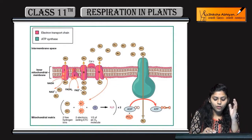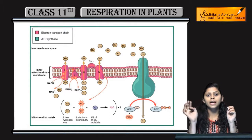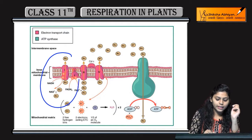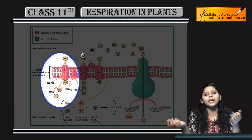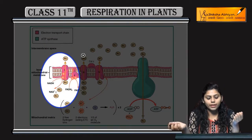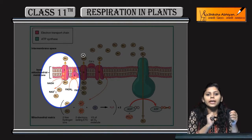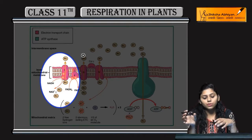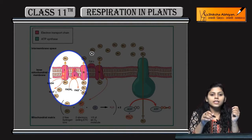There are four complexes: complex one, two, three, and four. Complex one is called the NADH dehydrogenase complex. In this, oxidation of NADH occurs — NADH becomes NAD+. The electrons are then further transferred to ubiquinone.